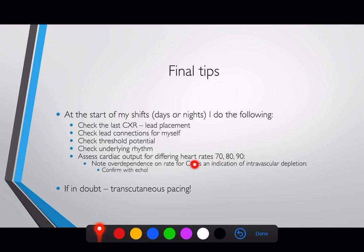If patients are very dependent on a fast heart rate, it indicates their stroke volume is probably inadequate and you need to optimise it — perhaps with inotropy, or more commonly the patient is intravascularly depleted. If the patient really depends on a heart rate of 90, consider assessing their fluid status with a transthoracic echo, VTI assessments, and so on. Sometimes all they need is a bit of fluid and you can bring their heart rate down to 70 or 80.